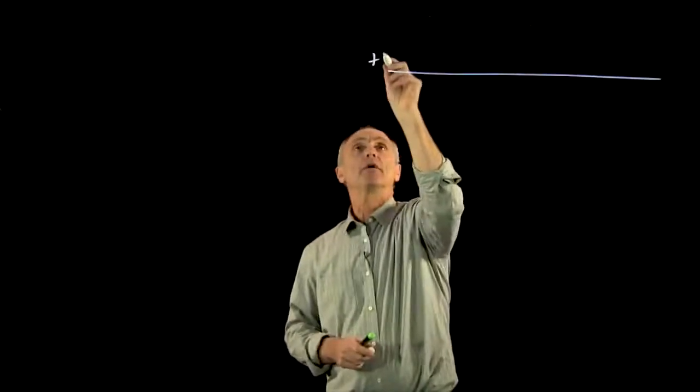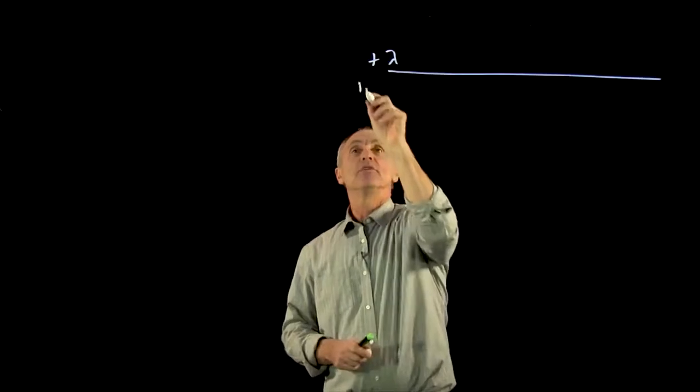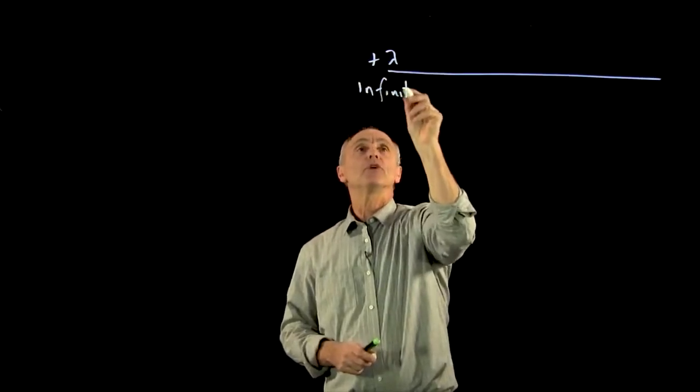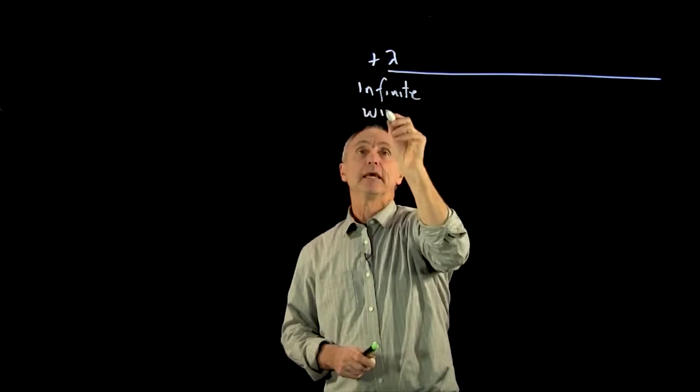I would now like to calculate the electric field for another geometry, which is an infinite wire plus lambda. So this with a uniform charge density, charge per unit length, lambda.